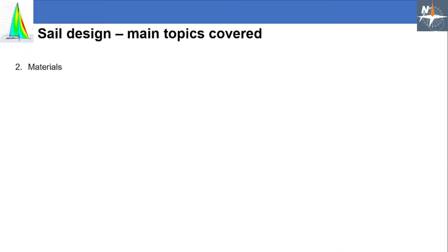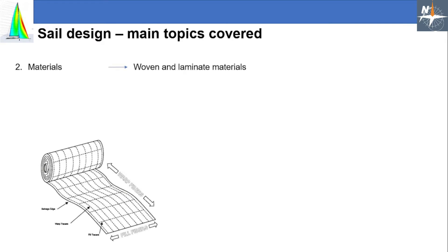The second main topic was about materials. We started by introducing woven materials and all the relevant terminology — warp, fill, crimp, bias, etc.